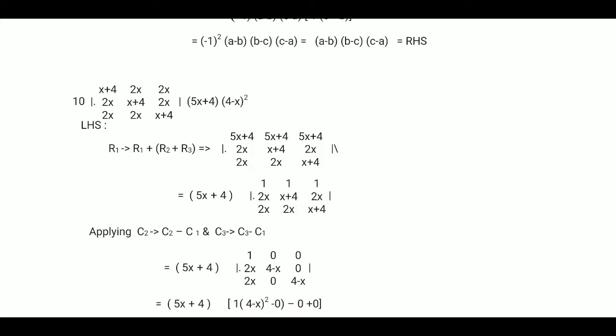Now there is question number 10, in which a determinant is given and you have to prove it equals (5x + 4)(4 minus x)². We see that from the right hand side, (5x + 4) is obtained by adding R1 becomes R1 plus R2 plus R3. Applying this, we get all elements of R1 equal to (5x + 4): adding correspondingly x + 4 + 2x + 2x = 5x + 4, and similarly the other columns also give 5x + 4.